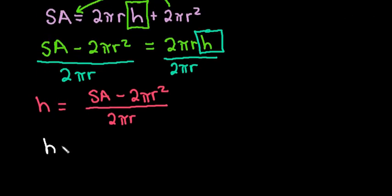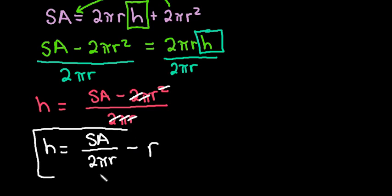I could also say an equivalent expression would be the height is equal to the surface area divided by 2 pi r, because I cannot simplify anything with these two, but on this one I can simplify the 2, the pi, and 1 of the r's. So I could just say minus the radius here, and I could also write it as this answer.